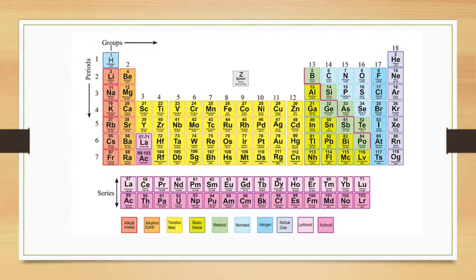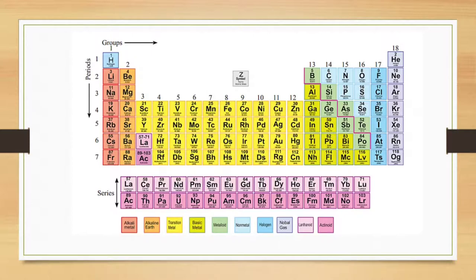Now let us first be clear about the names and symbols of all 118 elements. The first element is hydrogen, symbol H. Helium, symbol He. Lithium, symbol Li. Beryllium, symbol Be. Boron, symbol B. Carbon, symbol C. Nitrogen, symbol N. Oxygen, symbol O. Fluorine, symbol F. Neon, symbol Ne.